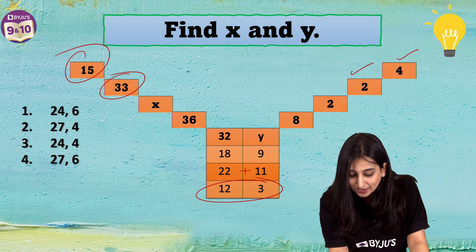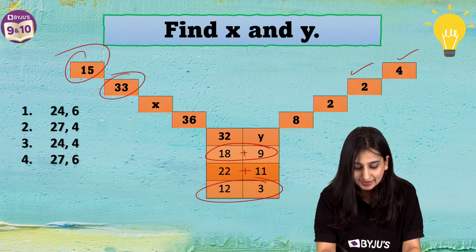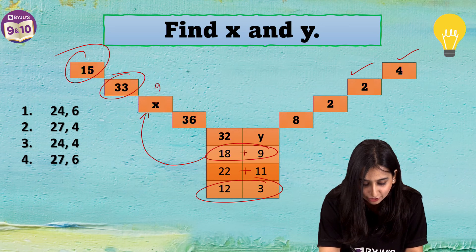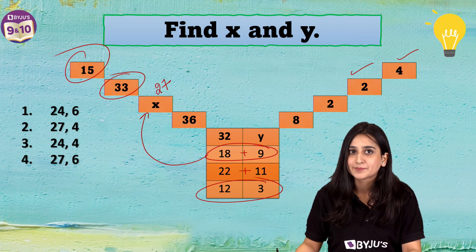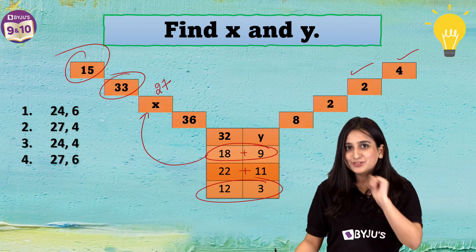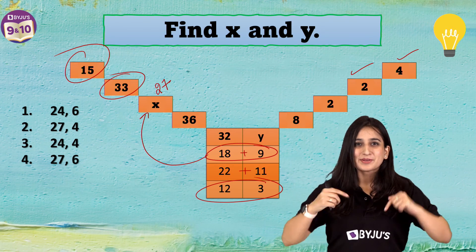Similarly, we will add 18 plus 9. And we will get the value of x as 27. Now, you have to tell me what is going to be the value of y. Comment below.